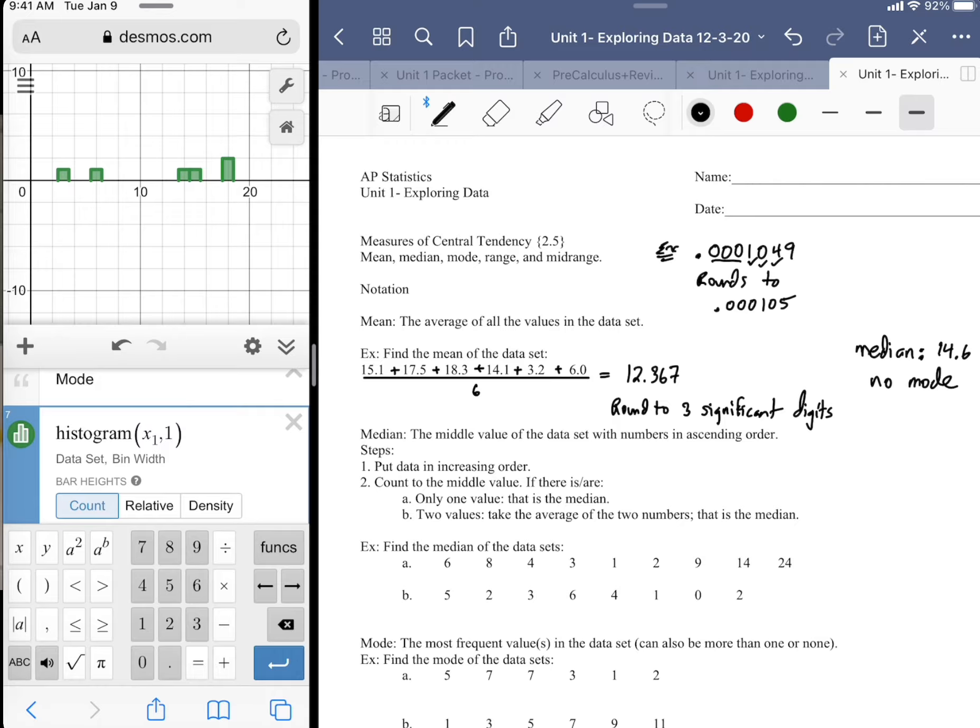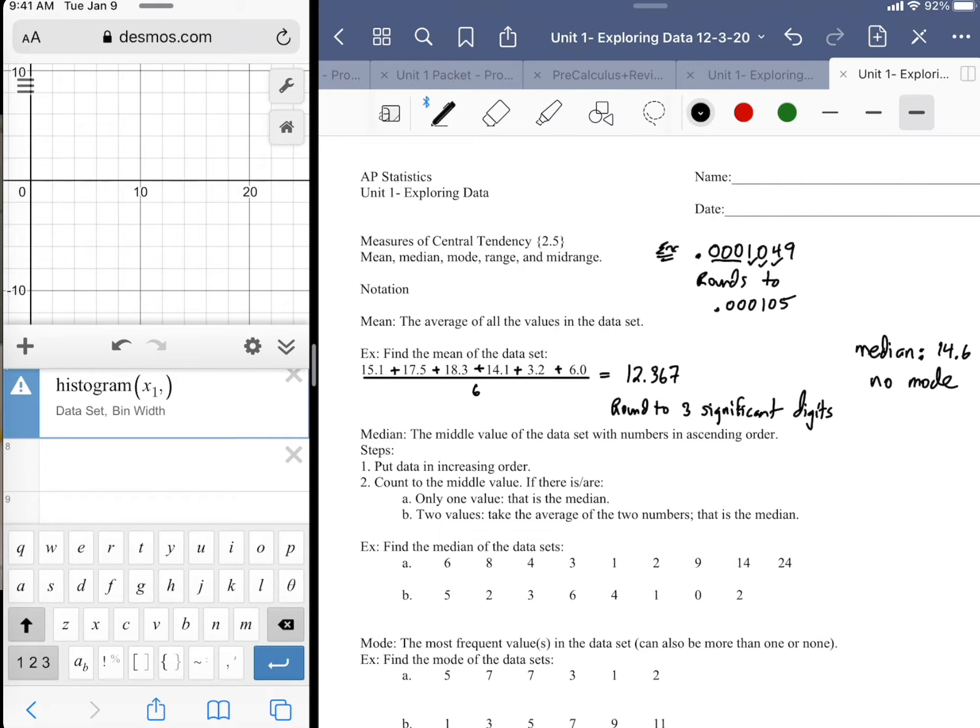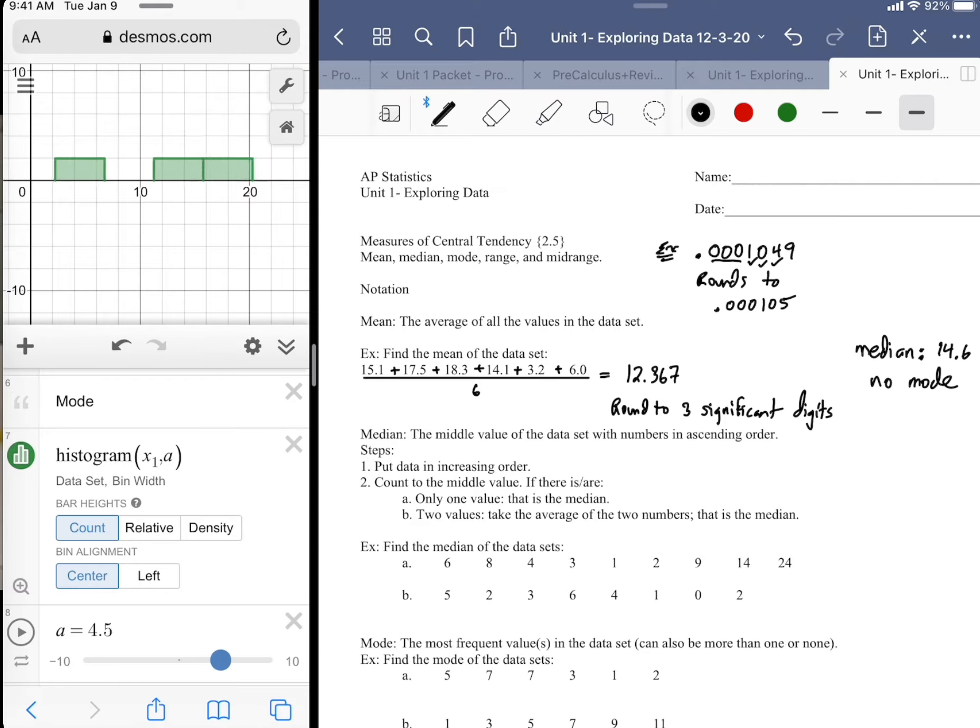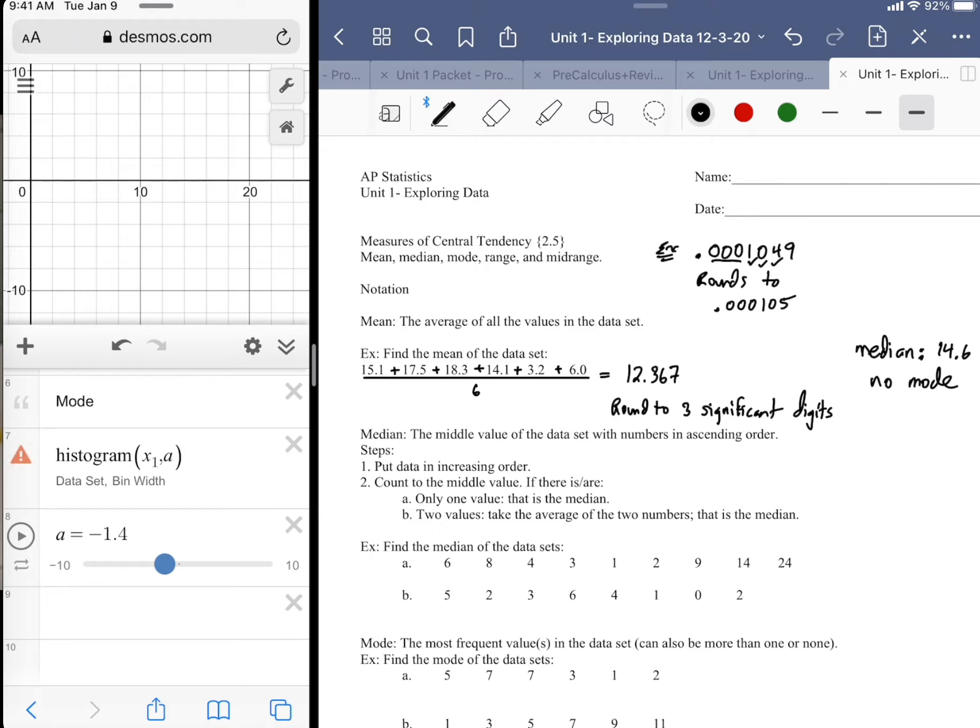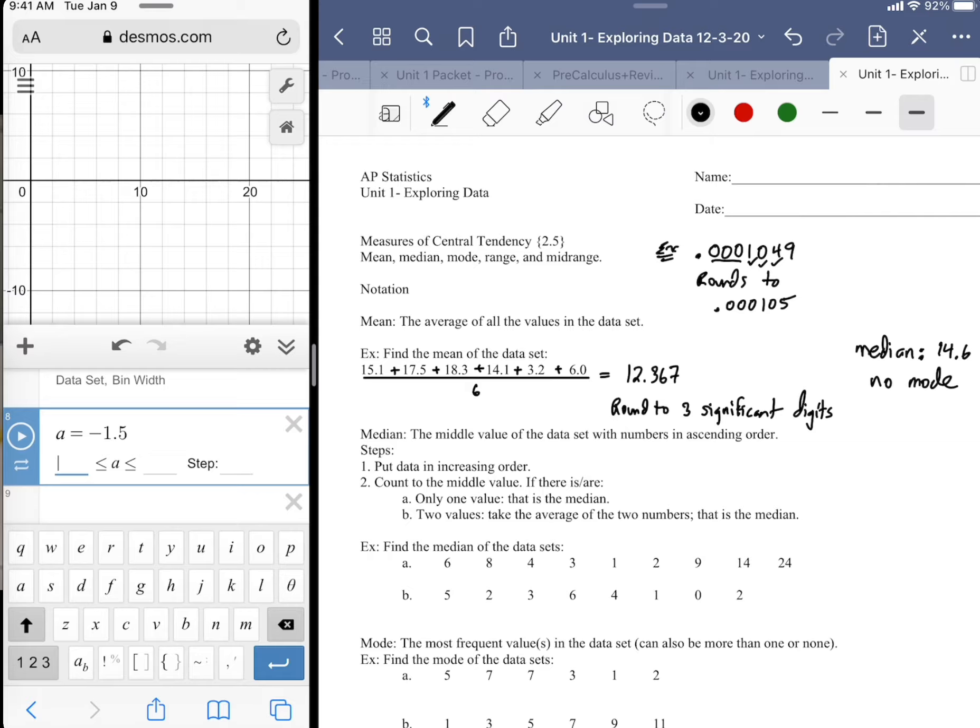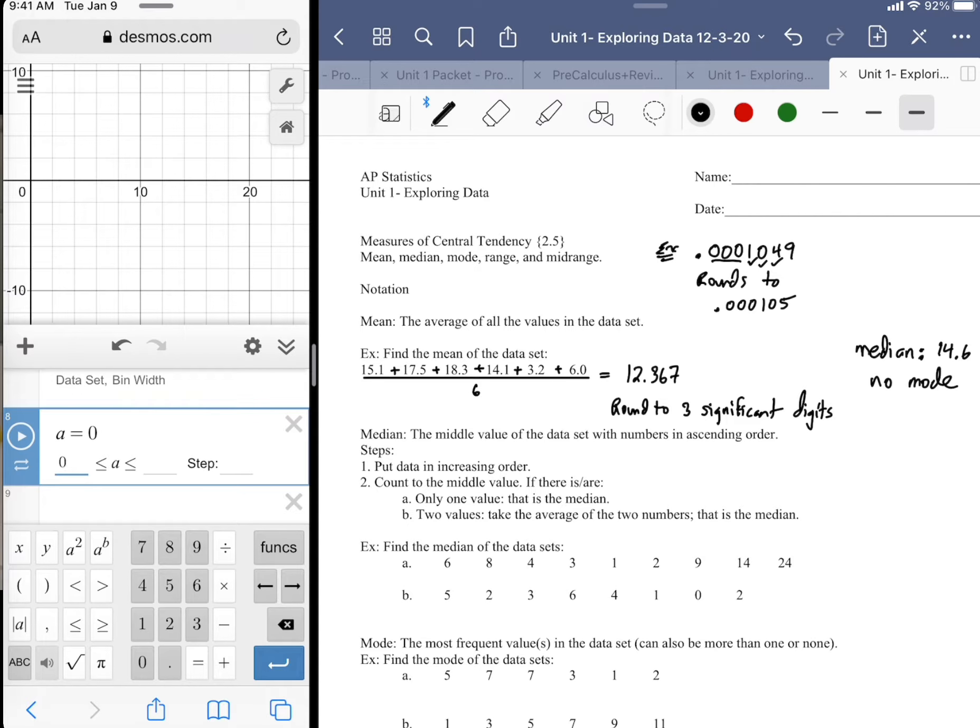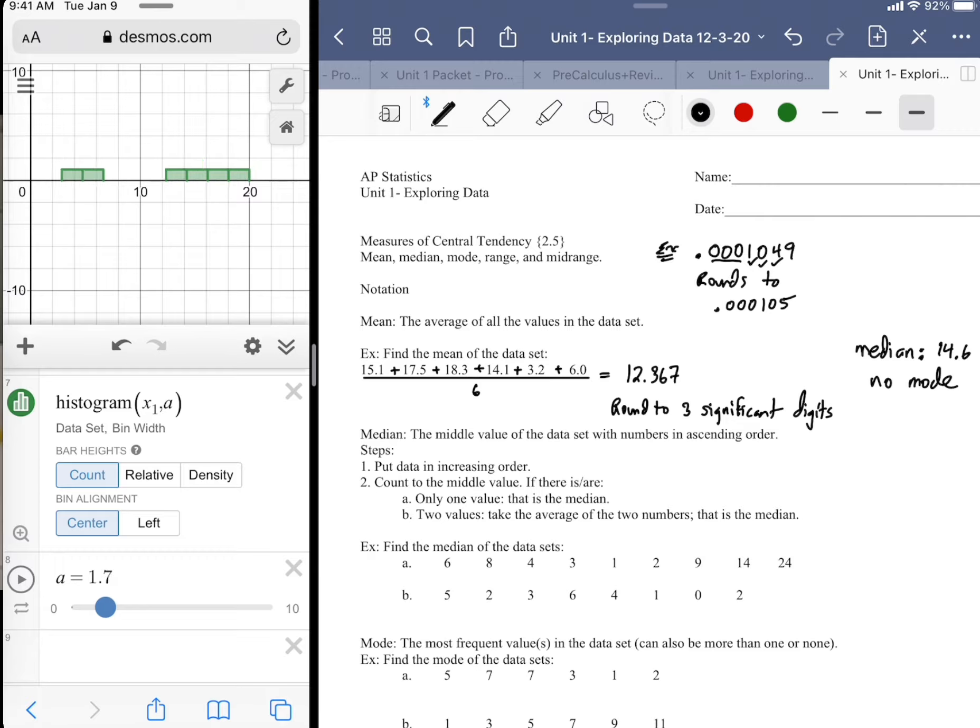Now, maybe you don't want to tap in and out of a histogram command. One thing that you could try to do, it doesn't always work, but you could put in a dummy variable. Some commands just don't allow you to put in a dummy variable. But if you do that, like the letter A, it'll present you with a slider option. And so I can manipulate the bin width by sliding along the slider because that's going to change the value of A that's contained within the histogram.